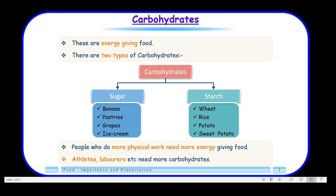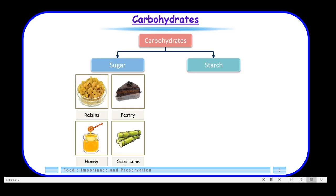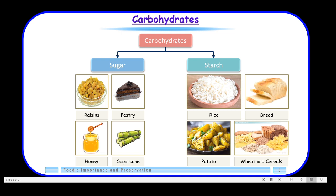Let us have a look at some pictures showing where we get carbohydrates. We get carbohydrates from raisins, pastry, honey, and sugar cane — these fall in the category of sugar. Under the heading of starch, we have rice, bread, potatoes, wheat, and cereals. So that was about carbohydrates.